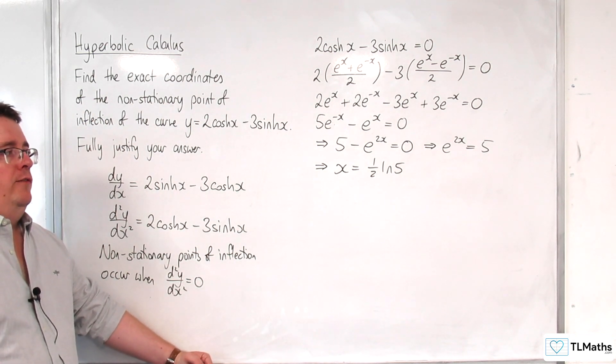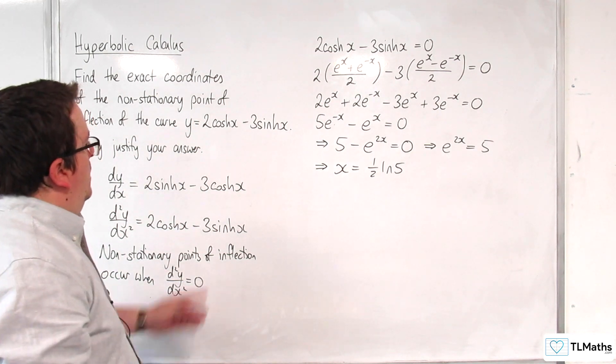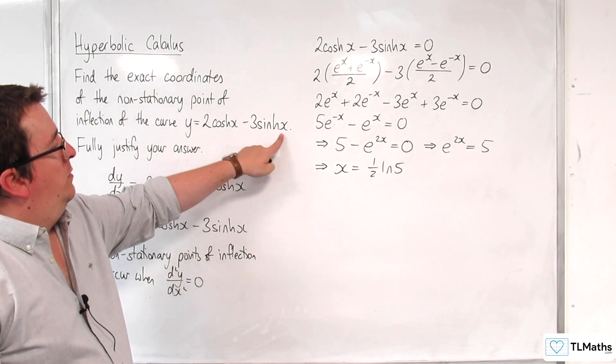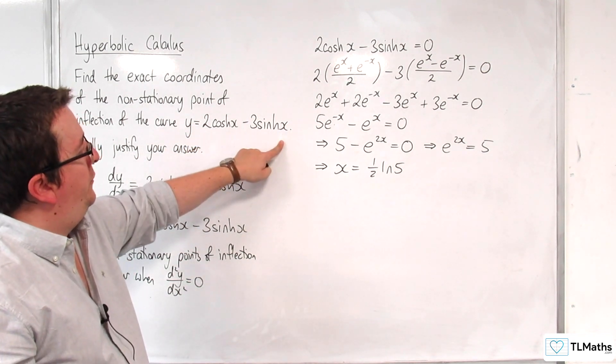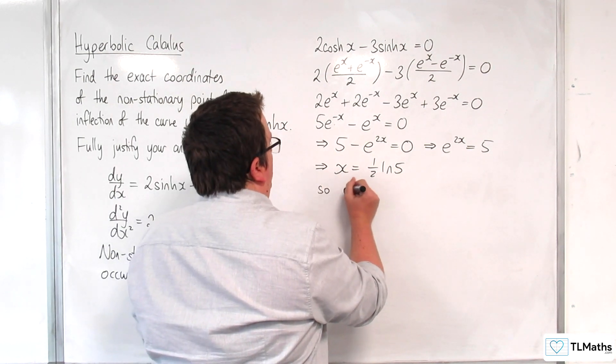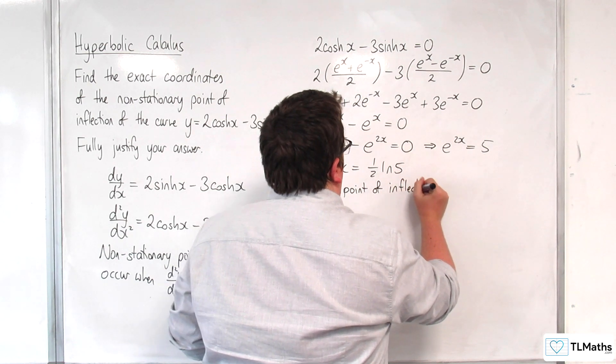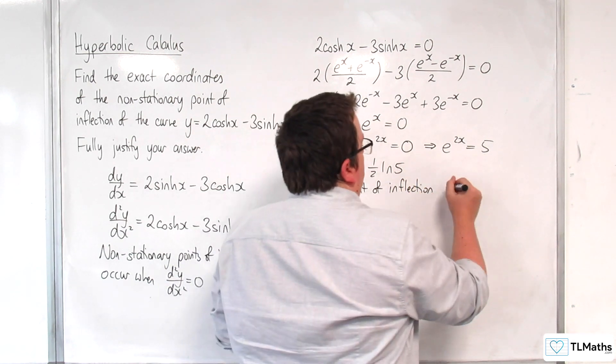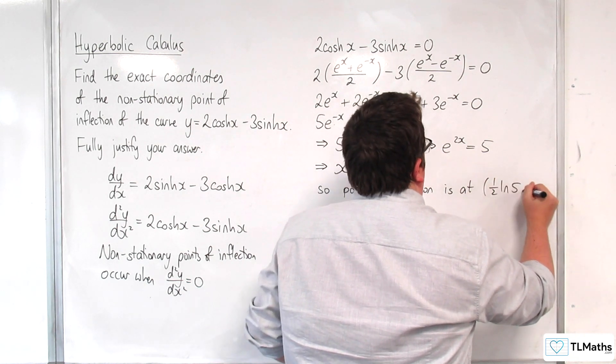So ½ln(5) is the x value. The y value is going to be when I substitute that into there. Well, funnily enough, I'm just going to get 0, aren't I? Because I just put that equal to 0 to solve it. So the point of inflection is at (½ln(5), 0).